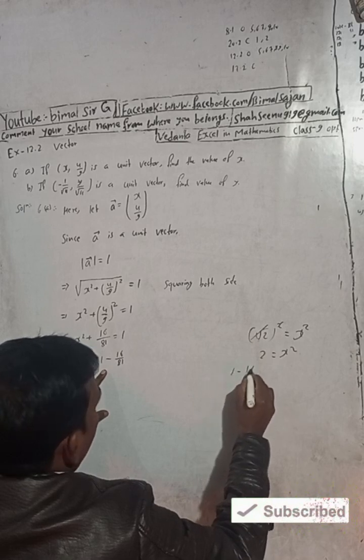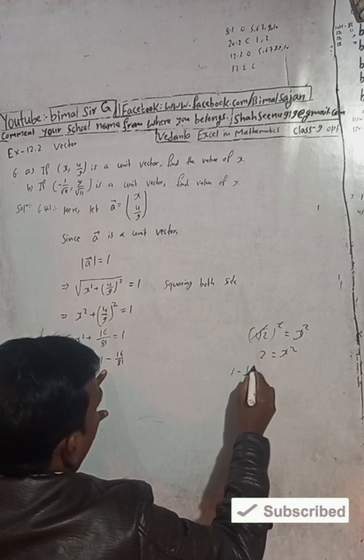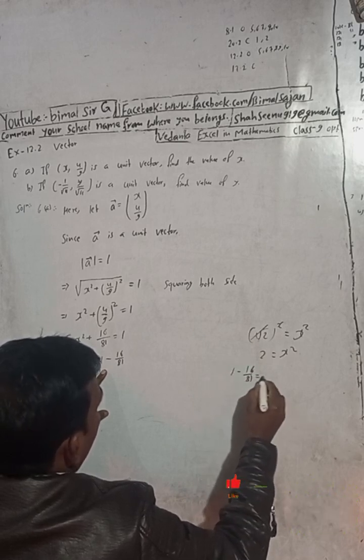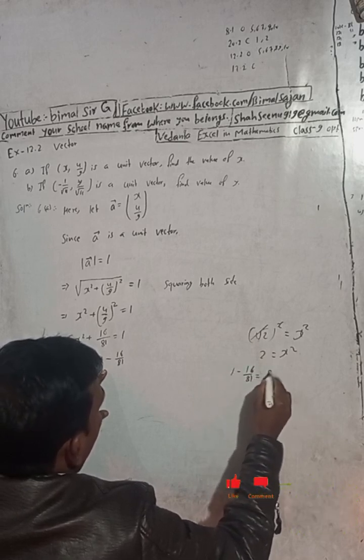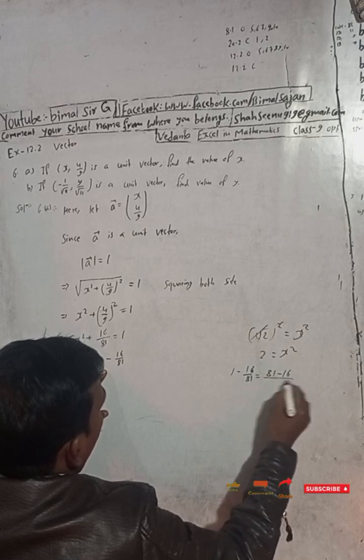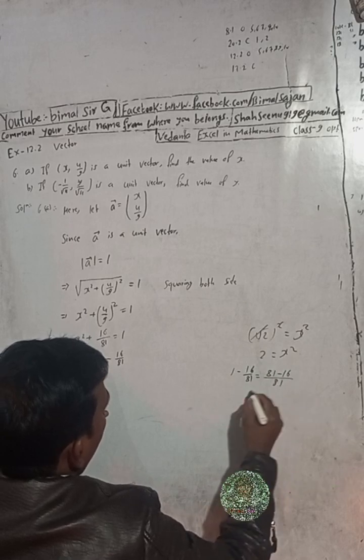Computing 1 minus 16 by 81: this gives us (81 minus 16) by 81.